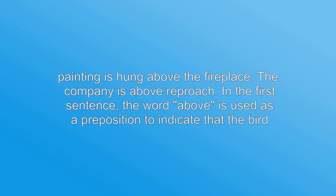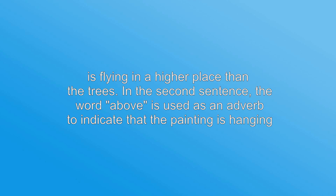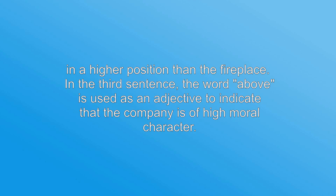In the first sentence, the word ABOVE is used as a preposition to indicate that the bird is flying in a higher place than the trees. In the second sentence, the word ABOVE is used as an adverb to indicate that the painting is hanging in a higher position than the fireplace. In the third sentence, the word ABOVE is used as an adjective to indicate that the company is of high moral character.